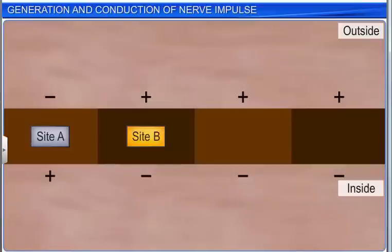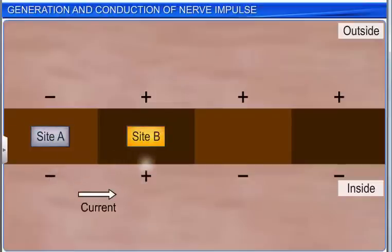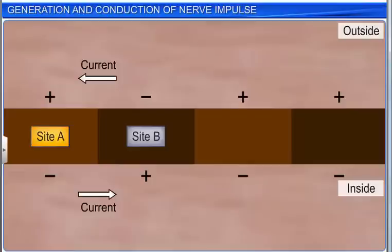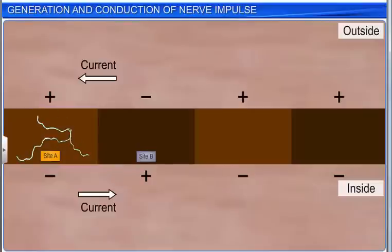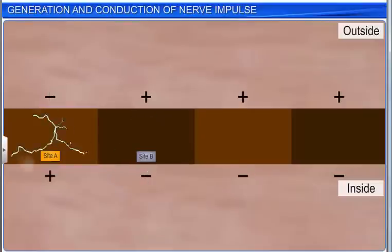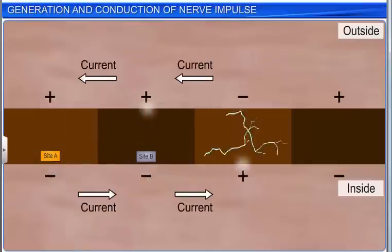At site B, the axon membrane has a positive charge on the outer surface and a negative charge on the inner surface. As a result, a current flows on the inner surface from site A to site B. On the outer surface, a current flows from site B to site A to complete the circuit of current flow. This reverses the polarity at the site and an action potential is generated at site B. Thus, the impulse generated at site A arrives at site B. The sequence repeats along the length of the axon for the impulse to be conducted.